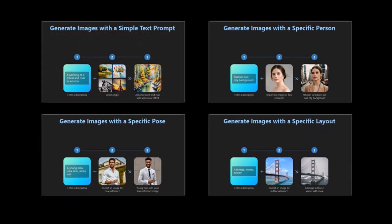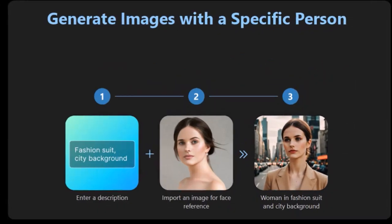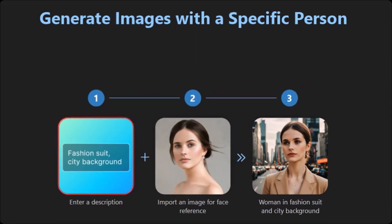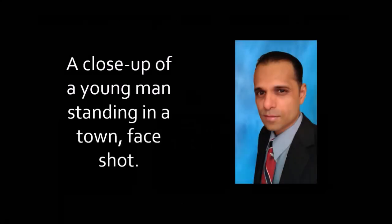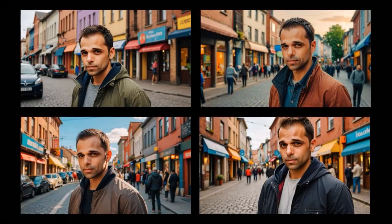In the second example, which is text-to-face, you write a prompt to describe the scene, then you upload an image of yourself or someone else, and then PhotoDirector generates the image based on your criteria. For this example, I used this basic prompt, then uploaded my image, and these are the images that were generated by PhotoDirector.